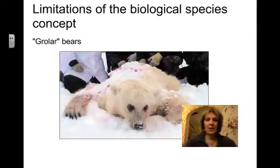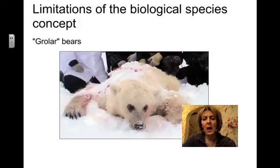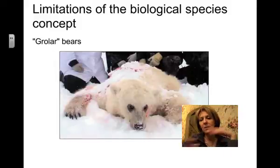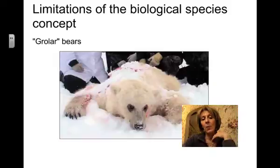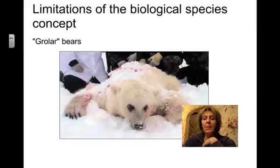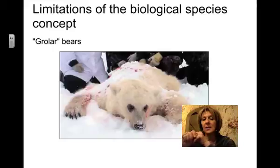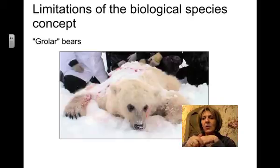But there are limitations of this biological species concept. For example, growler bears are hybrids of polar bears and grizzly bears whose territories sometimes overlap. This is an example of a polar bear-grizzly bear hybrid that happened in nature. The offspring are viable, but their different habitats do not allow them to very often interbreed, and when they do, there's not a lot of gene flow that occurs between them.